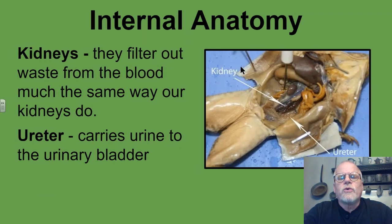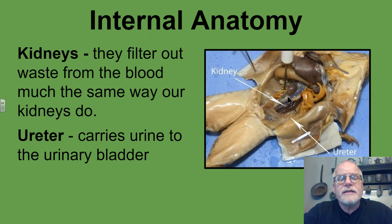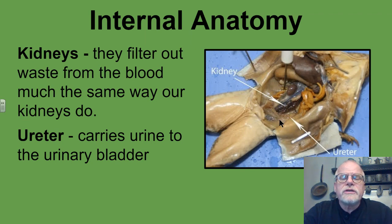If we remove all those organs, we can find the kidneys. The kidneys filter out waste from the blood, much the same way that our kidneys do. They produce a substance called urine, and that urine travels down through little tubes called the ureter, down to the urinary bladder, where it would be excreted out through the cloaca.